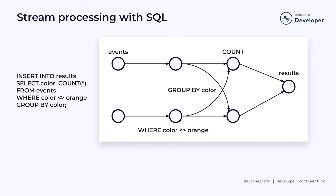The example I've been showing can be implemented using Flink SQL, and here's what that would look like. Flink SQL can transform a SQL statement into a Flink application. The first line, INSERT INTO results, sets up the results table as the sink. The SELECT COUNT and GROUP BY clauses set up the part of the job that repartitions the stream by color and counts the events of each color. WHERE COLOR IS NOT EQUAL TO ORANGE creates the filtering step in the job graph. And finally, the FROM EVENTS clause specifies the event source for this streaming application.